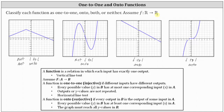Going back to our answers: for the first graph, we can say neither. For the second graph, we can say the function is onto only. And for the third and fourth functions, we can say the functions are both one-to-one and onto. I hope you found this helpful.